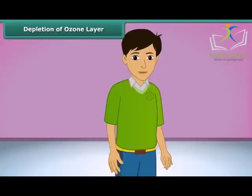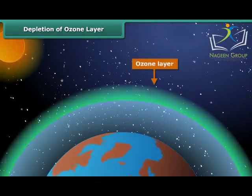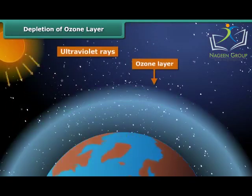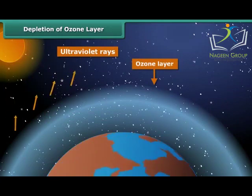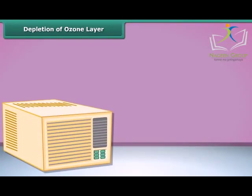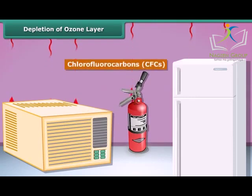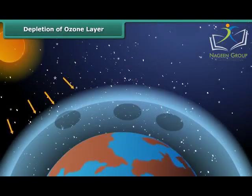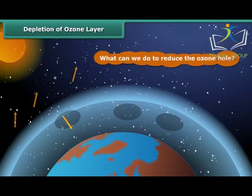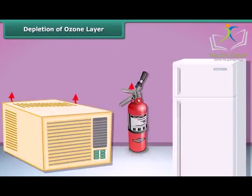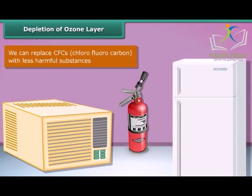Let us learn about the ozone layer. It is a layer of ozone gas in the upper atmosphere of Earth, and it protects us from the harmful ultraviolet rays of the sun. Things like air conditioners, refrigerators, and fire extinguishers release chlorofluorocarbons — CFCs — into the atmosphere and create holes in the ozone layer. CFCs are another type of air pollutant. To reduce the ozone hole, we can replace CFCs with less harmful substances to save the ozone layer from depletion.